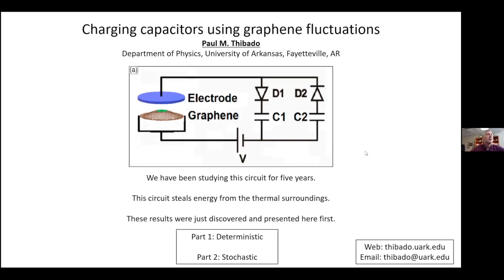I'm going to talk about charging capacitors using graphene fluctuations. This is the circuit I'm going to use — we've actually been studying this circuit for about five years. I'm going to show you that this circuit can steal energy from the thermal surroundings. These results were really just discovered and presented here first. In the first part, I'll talk about the deterministic properties or solutions of this circuit, and then in the second part, the stochastic part.